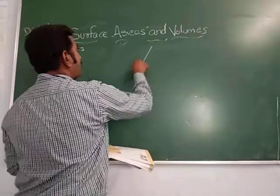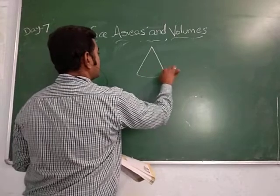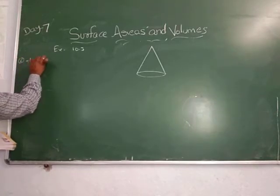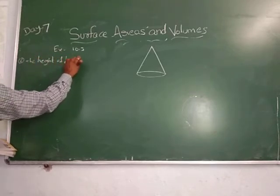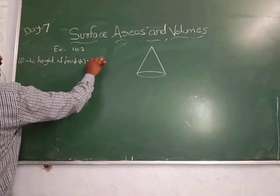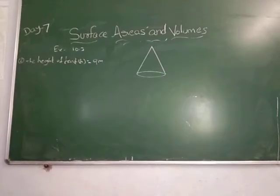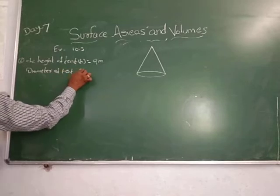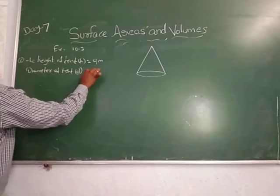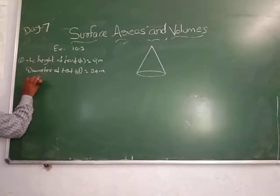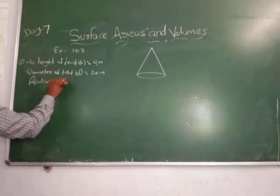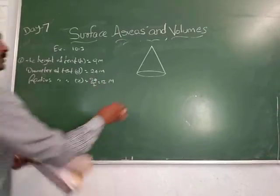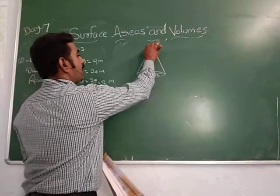The tent is in this shape. Height of the tent H equal to 9 meters. Its base diameter, that is diameter of tent, equal to 24 meters. We require radius. Radius of tent R equal to half of diameter, that is 24 by 2, equal to 12 meters. So radius is 12 meters and height is 9 meters.